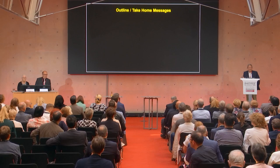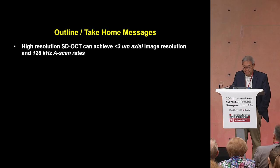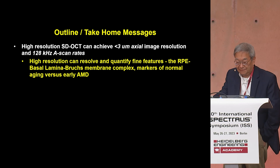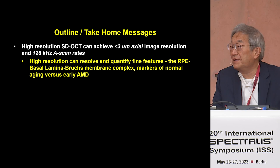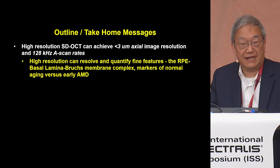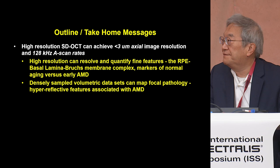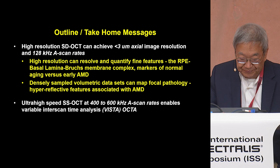The outline and take-home messages are: high-resolution OCT, which achieves less than 3 micron axial resolution, can be used to quantify fine structures in the outer retina, such as the RPE basal lamina Bruch's membrane complex. These are potential markers for normal aging and the transition to early AMD. It's also possible to do volumetric imaging to assess focal pathologies, such as hyper-reflective features.